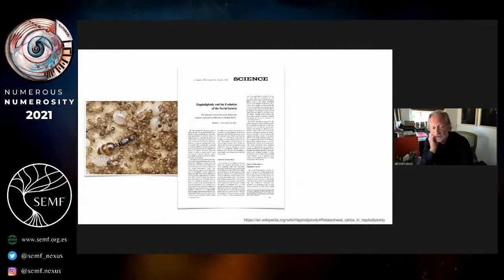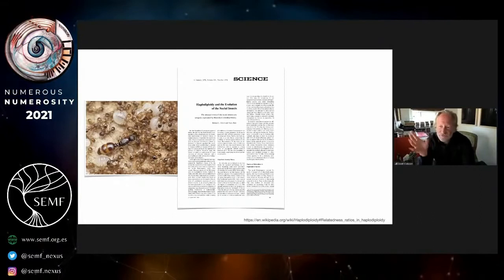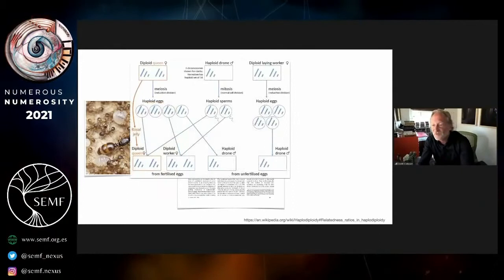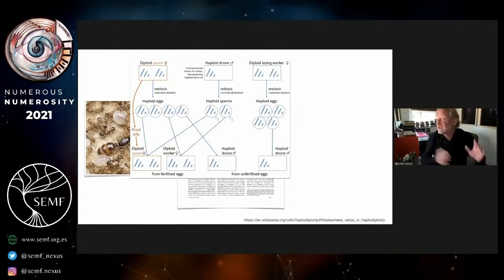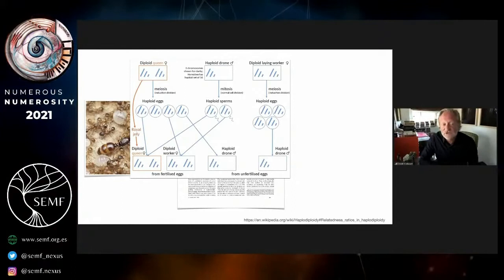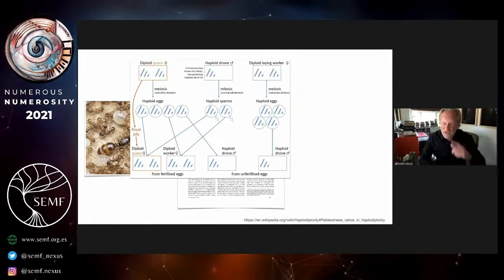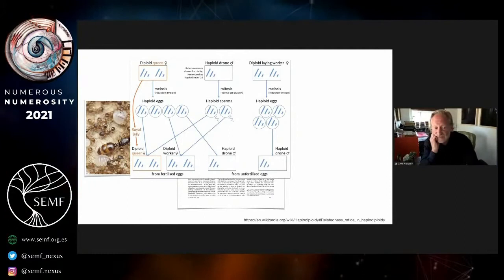Until this paper came along by Robert Trivers and Hope Hare, which showed us the rather unique and intriguing genetic system of the ants. This is a bit of a complicated diagram, but just to point out: you start with a diploid queen, diploid meaning it has two copies of every gene like we do. It produces through meiosis eggs which are haploid.